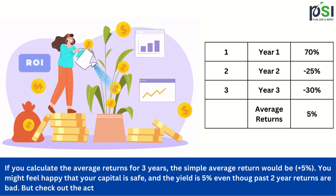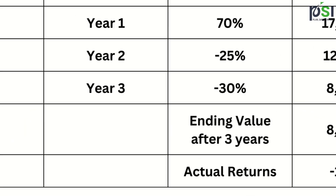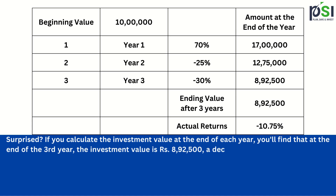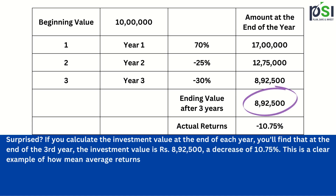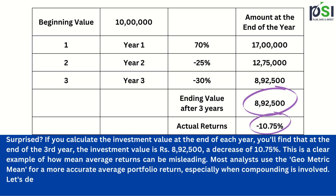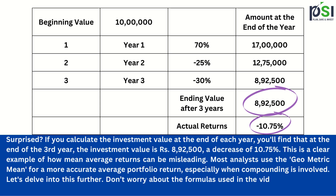But check out the actual returns and real numbers. If you calculate the investment value at the end of each year, you'll find that at the end of the third year, the investment value is Rs 8,92,500 — a decrease of 10.75%. But your simple average mean is plus 5%, while your actual returns are minus 10.75%. This is a clear example of how mean average returns can be misleading.